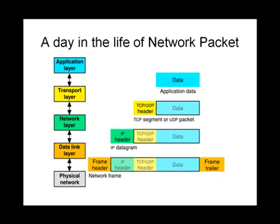Before moving on to what raw sockets are and what their functionality is, let's have a look at how a network packet traverses through the network stack. Assuming this is an ethernet network, this is the whole OSI layer: the physical network, the data link layer, the network layer, transport, and the application layer. Once a packet comes in, it comes in complete with all headers - the ethernet header for ethernet based networks, followed by the IP header, the TCP/UDP header, and finally the data and the frame trailer.